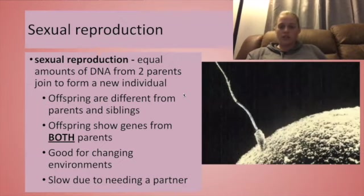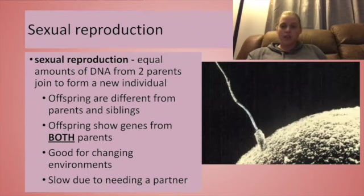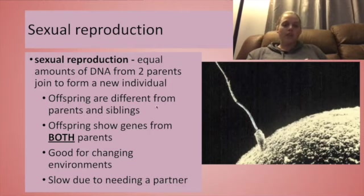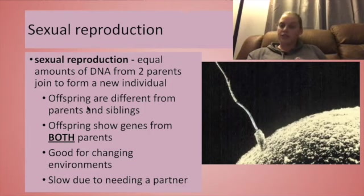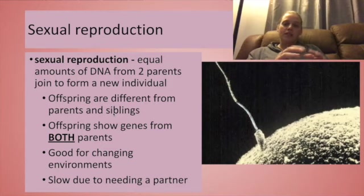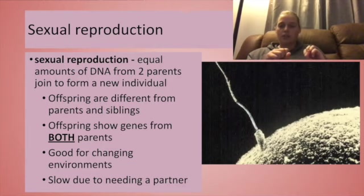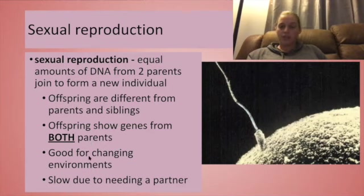Meiosis is used to create the cells involved in sexual reproduction, so the egg and the sperm. The egg and the sperm are each going to deliver the same amount of DNA to the offspring, so the egg is going to give one set, and the sperm is going to give another set to the individual. The offspring is going to be different from both parents because they're getting a set of genes that are going to be different from each other from each parent.